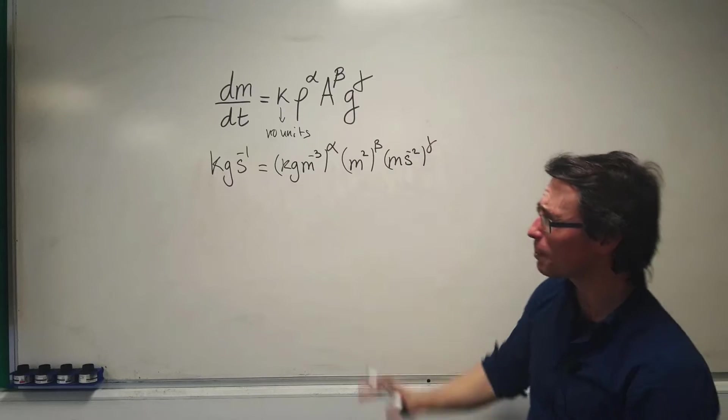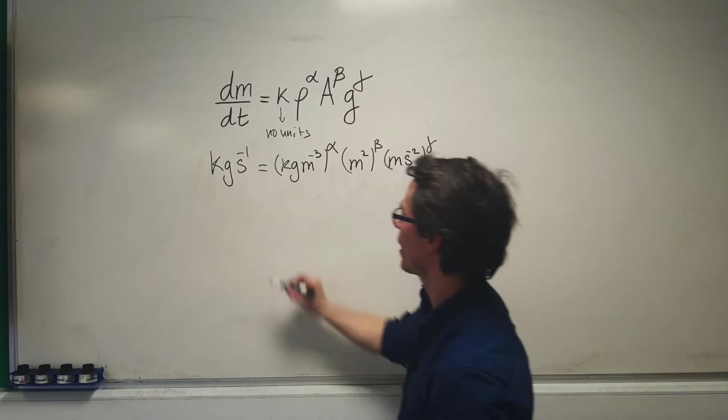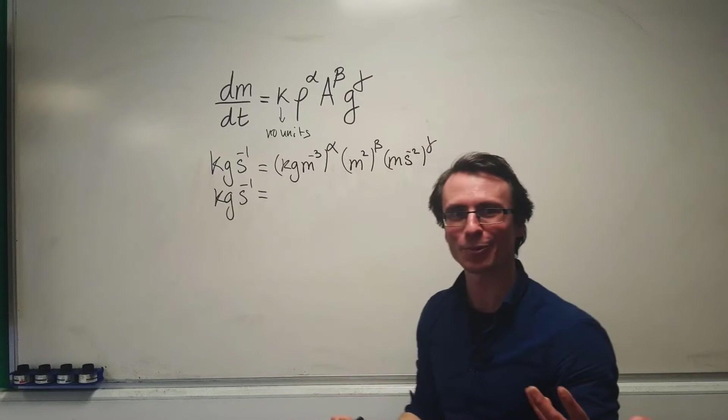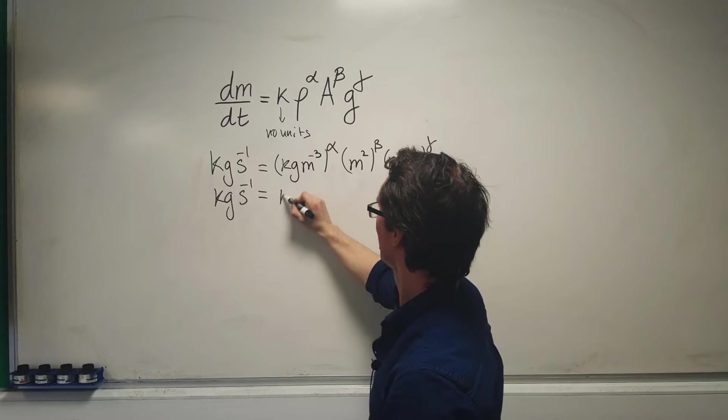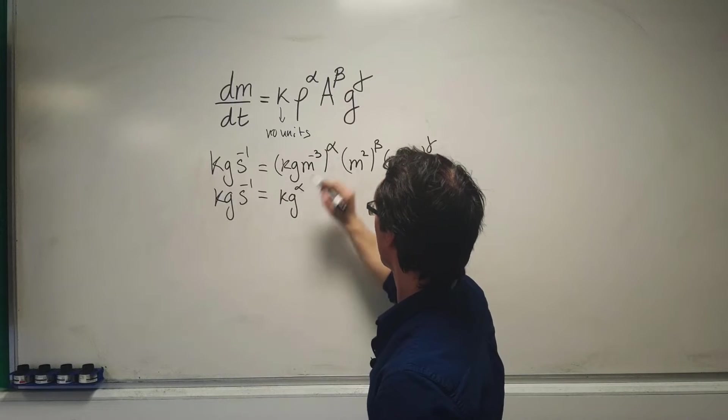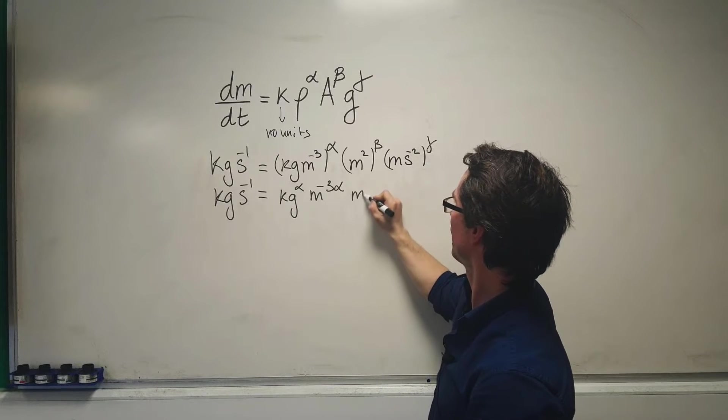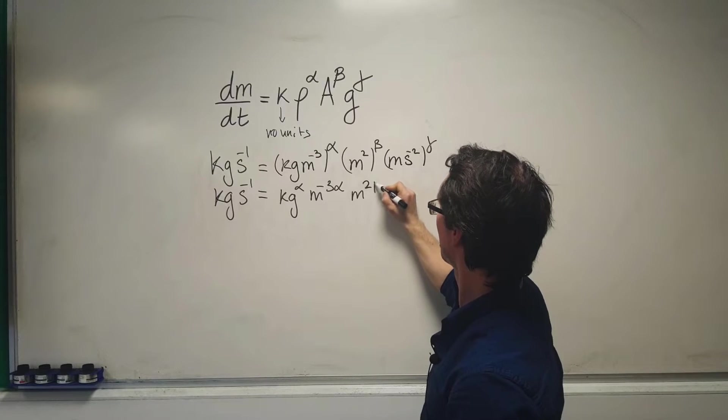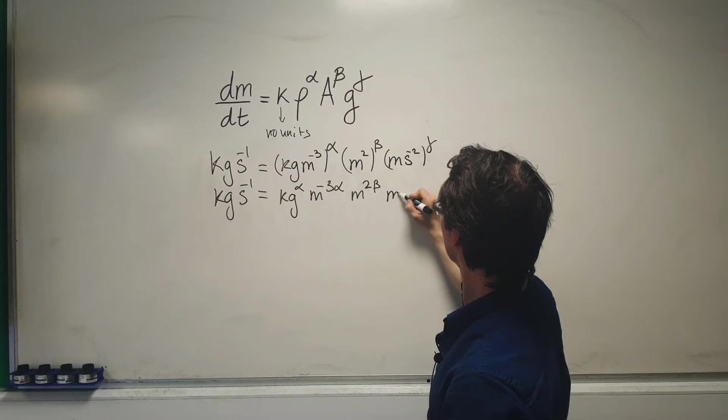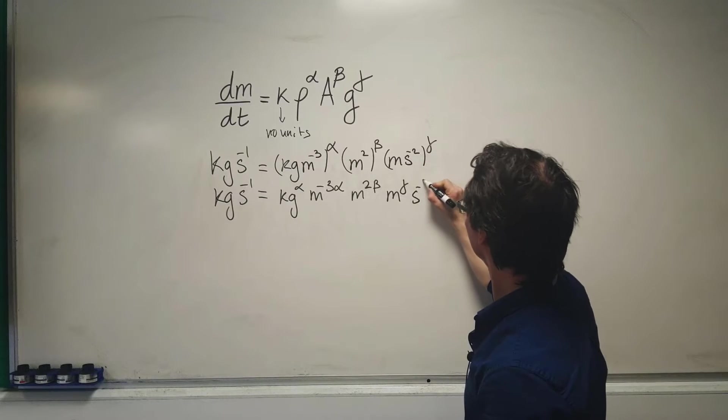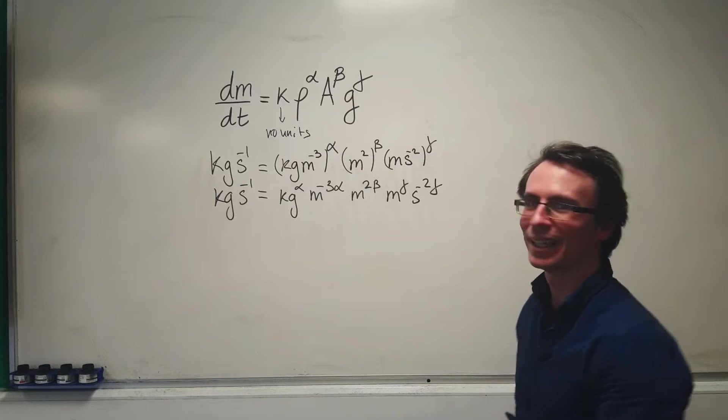Let's expand the right-hand side. We get kg·s^(-1) equals kg^α · m^(-3α) · m^(2β) · m^γ · s^(-2γ).